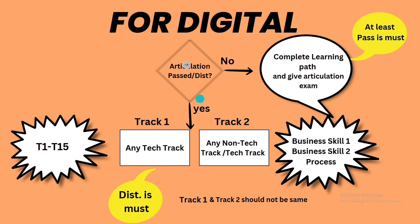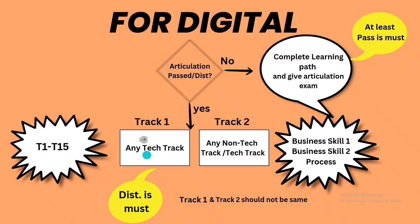Now, if you have already successfully cleared the articulation in the previous cycle, in the survey form you have to select that you don't wish to go again for the articulation exam — click 'No'. Then in the Track 1 option, all the tracks are technical tracks only, so you have to select any technical track. For example, I am selecting T12 from the Track 1 dropdown.